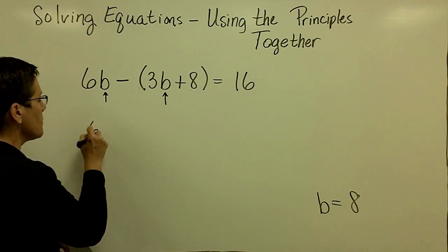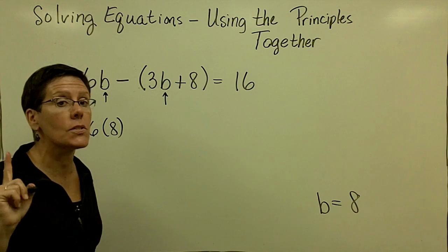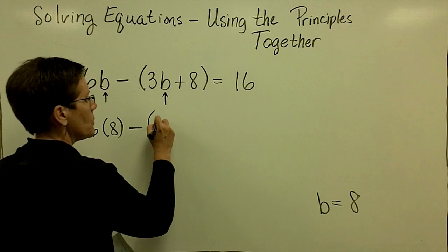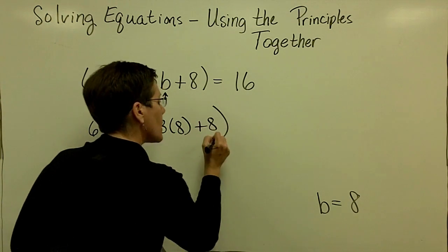That'll be 48 in a minute, but I do what's in the parentheses first via order of operations. Minus 3 times B, which is 8, plus that 8, and then close those parentheses.